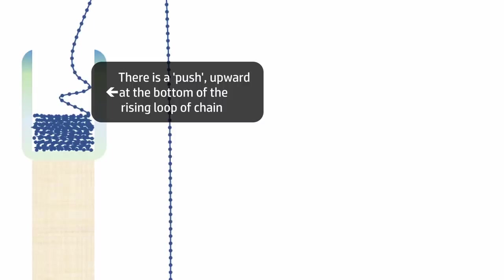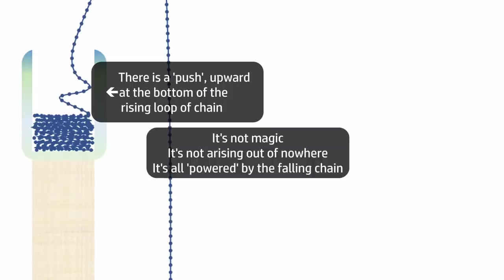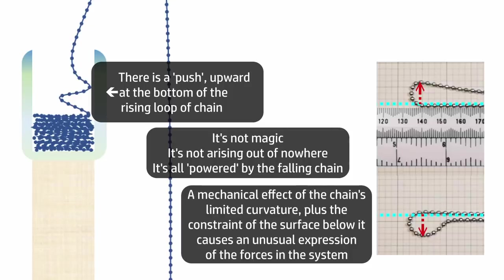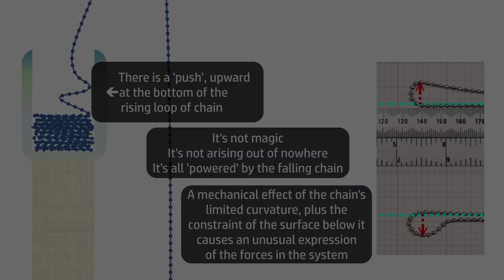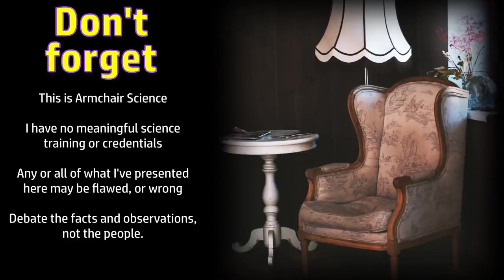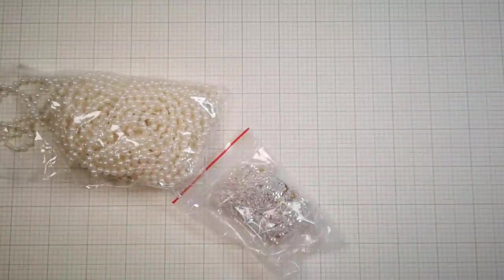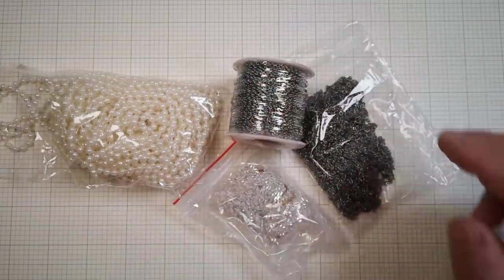So in summary, I think I would describe it like this. There aren't forces arising out of nowhere down there at the bottom. All of this is powered by the falling side of the chain, because that's the only input for the whole system. It's just that a mechanical effect of the uptake of the chain causes those forces to be expressed in a rather special way. I think that makes sense. As always, this is just my unqualified armchair appraisal of a quite complex physical system. But I'm reasonably confident this is a decent description of what's occurring. And as I say, I'm pretty convinced by the evidence Steve has presented in support of this. The only question left for me now is what am I going to do with all these other bits of chain I bought?